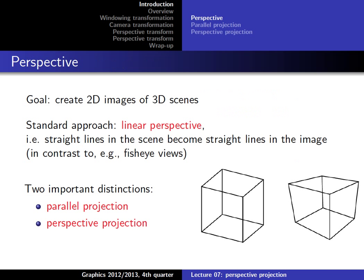When we do this projection, we have to consider that people see a scene in a certain perspective. There are of course different ways to represent perspective in an image. In graphics we are usually interested in linear perspective, as opposed to more distorted perspectives such as a fisheye view, where the center is enlarged and you have distortions at the sides. In graphics we mostly deal with linear perspective, which can be distinguished into two most important types: parallel projection and perspective projection.